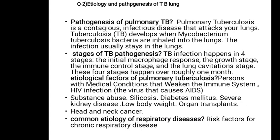TB infection happens in 4 stages: the initial macrophage response, the growth stage, the immune control stage, and the lung activation stage. These 4 stages happen over roughly within 1 month. Etiological factors of pulmonary tuberculosis means the causes of tuberculosis.